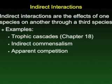As resource managers study food webs and the interactions between species, it's important for them to understand the wide variety of ways that these interactions occur. One thing that's not immediately obvious are the indirect interactions. We'll look at an example of that in chapter 18 with trophic cascades, but in this chapter we'll be looking at indirect commensalism and apparent competition.